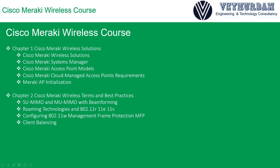We will especially go over 802.11ax, which is the next big thing in the wireless medium — also known as Wi-Fi 6. You will see those 802.11ax access points firsthand. Then we will understand Cisco Meraki cloud-managed access point requirements and learn how to initialize a Meraki access point.